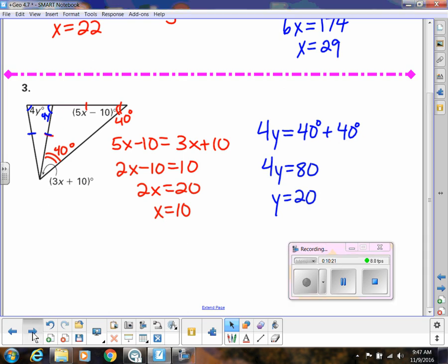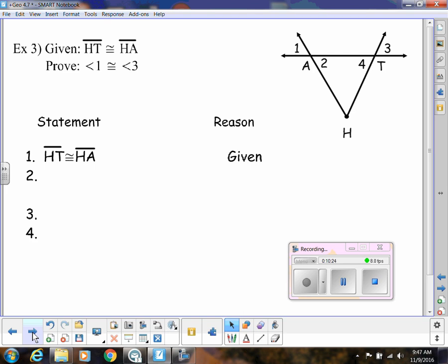So let's do one more where we're going to do a proof. So we have in our diagram, HT is congruent to HA. And we're trying to prove that angle 1 and angle 3 are congruent. Well, what are we going to do to get there? Well, if HT and HA are congruent, that means this is isosceles. And then the base angles would be congruent. So we could say angle 2 and angle 4 are congruent. And then how do those relate to 1 and 3? Well, then 1 and 3 are vertical angles with those. So then we can use the transitive property. So let's do that.